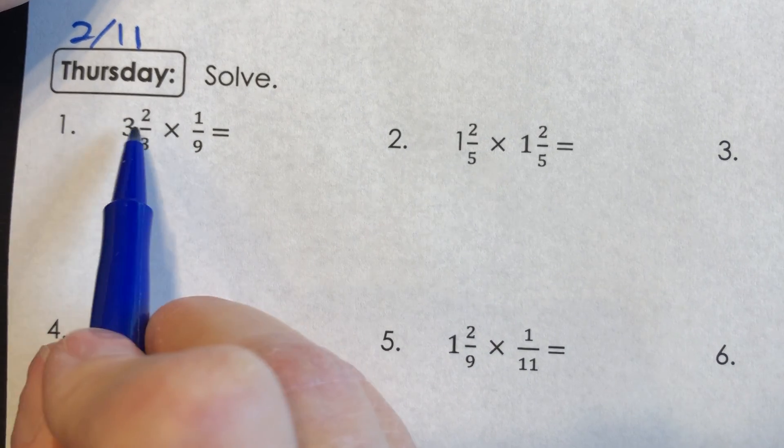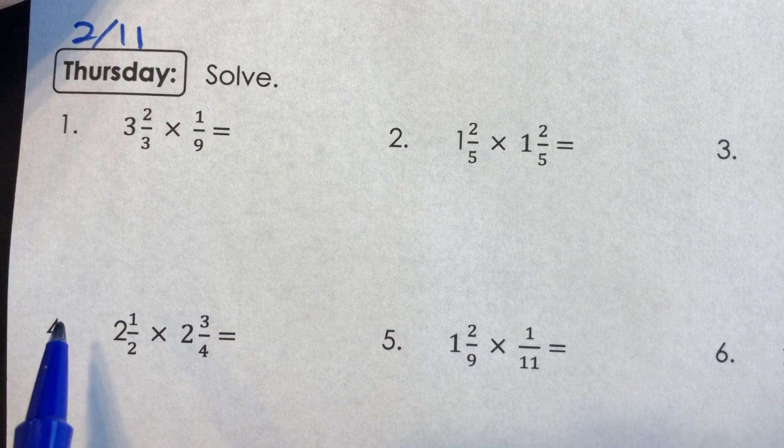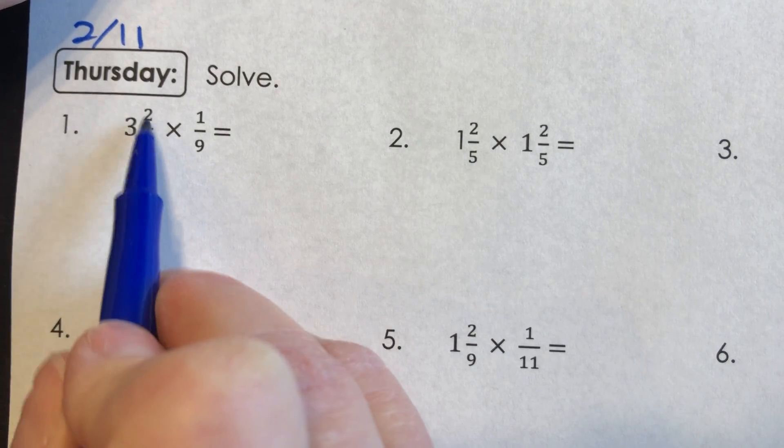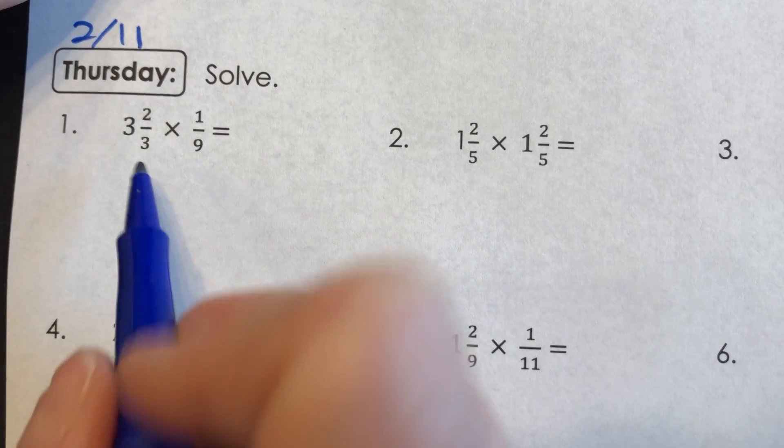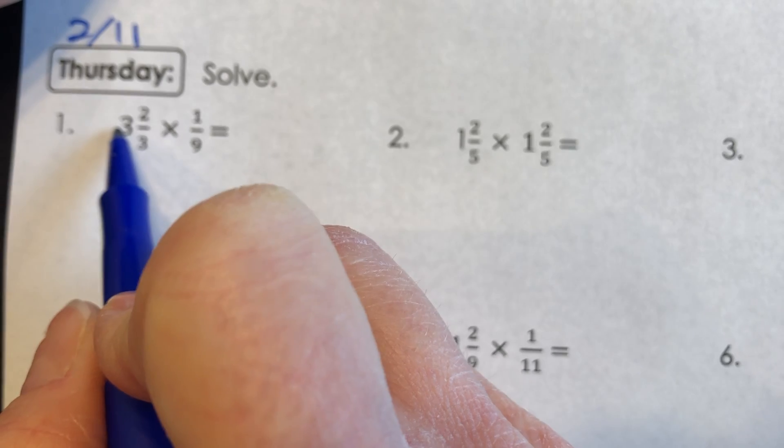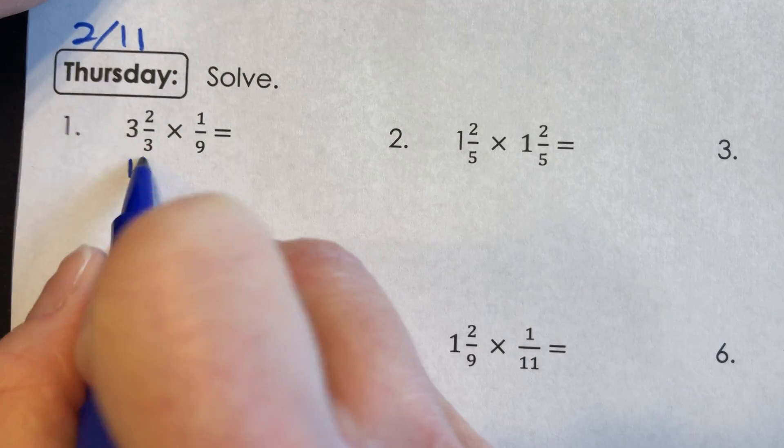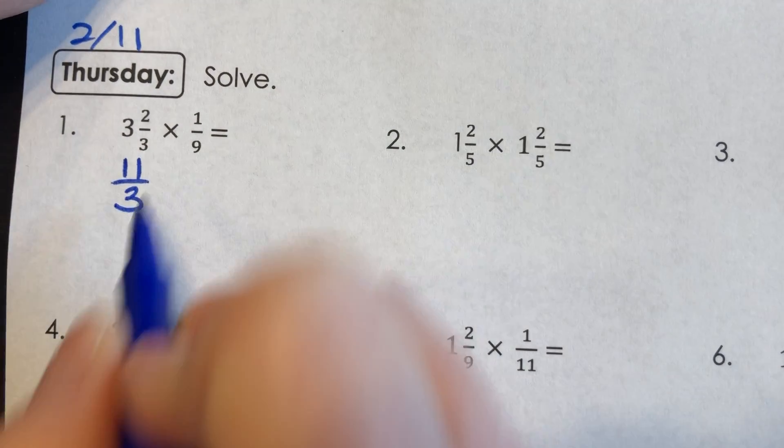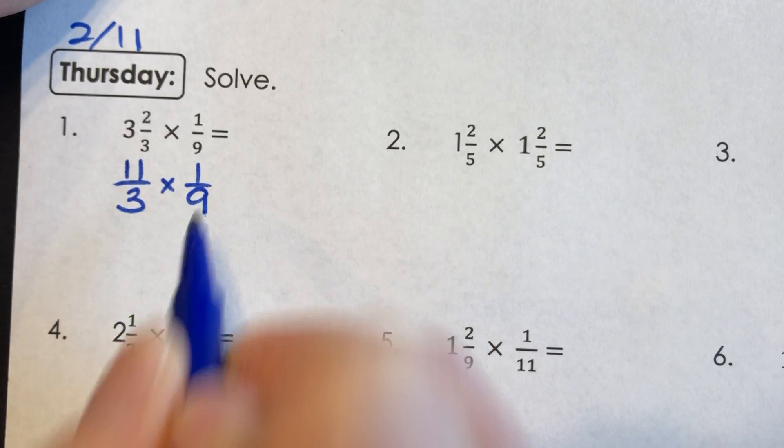For number one, I see 3 2/3 times 1/9. Before I begin, I'm going to change this to an improper fraction. So 3 times 3 is 9, 9 plus 2 is 11/3 times 1/9.